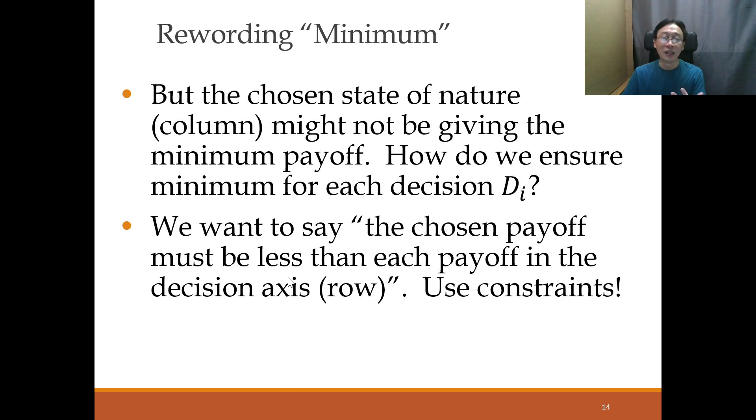Now, while we can select the particular coefficient, how do we ensure that that particular coefficient is the minimum? You see, we can select the first one, second one, third one, first column, second column, third column. But how does the model know that it is the minimum? So we need to have a way to say that selected coefficient better be minimum. The way we do that is not to think about comparing with everything and then finding the minimum. What we try to do is to constrain this unknown value called minimum. So we want to say something like the chosen payoff, that means the chosen coefficient along the row, must be less than each of the coefficients.